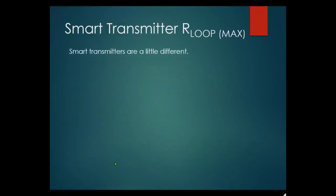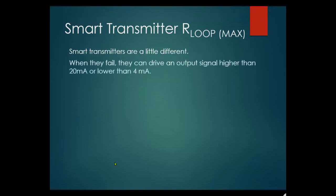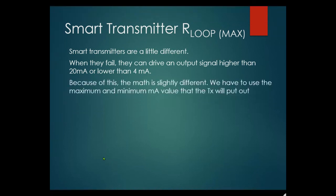Smart transmitter note: when smart transmitters fail, they can drive the output signal higher than 20mA or lower than 4mA. Depending on whether they fail toward the upper or lower range value, they signal that something is wrong with the loop — this only applies to smart transmitters. An analog transmitter wouldn't detect or signal the failure, but smart transmitters can send a fault signal to the control board.